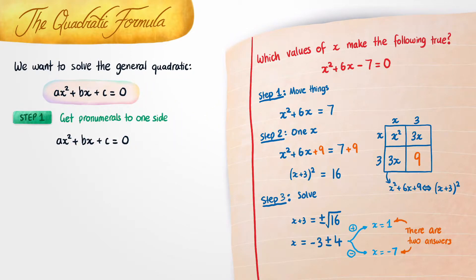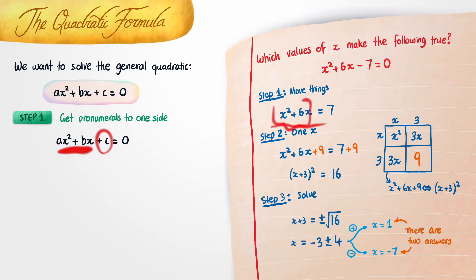The first step we have to perform is to move all the pronumerals to one side and all the constants to the other side, as we did in the example. Everything with an x ended up on the left, and everything without an x ended up on the right. So that means c has to go to the right, but it gathers a negative sign when it does that.